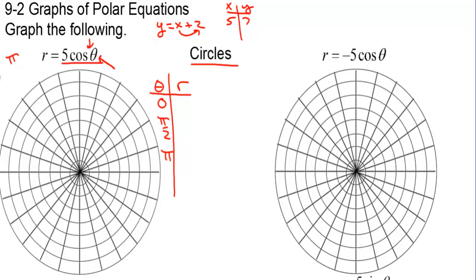If I plug 0 in for theta, cosine of 0 is 1, so 1 times 5 is 5. Pi over 2: cosine of pi over 2 is 0, and 0 times 5 is 0. Cosine of pi is negative 1, and negative 1 times 5 is negative 5. So let's plot the point (0, 5) — that's out at 5 — and at pi over 2, r is 0. Now we've gone halfway around the circle.